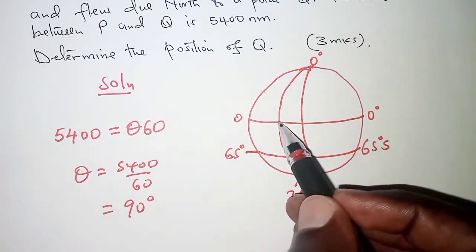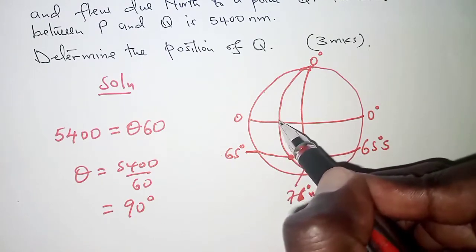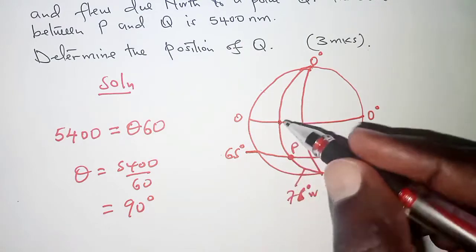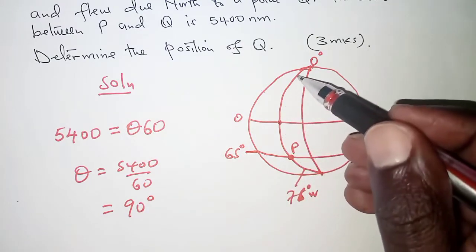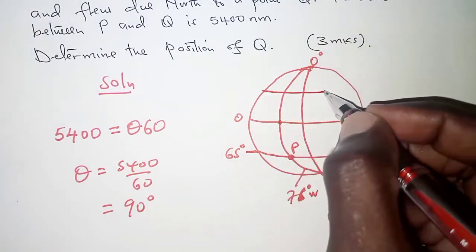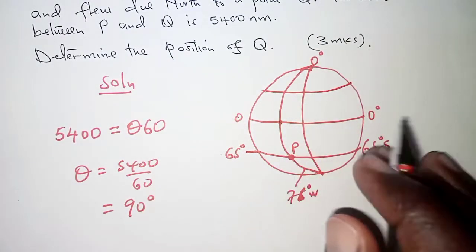From P up to the equator, that is 65. And we need to move through 90 degrees. So 65 is still less than 90. That means the plane was still flying that direction. And therefore, we can try and locate it somewhere here.